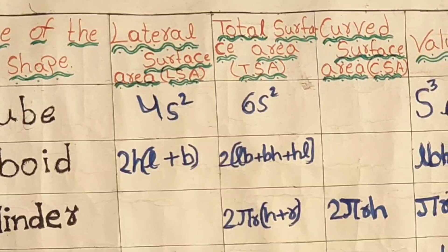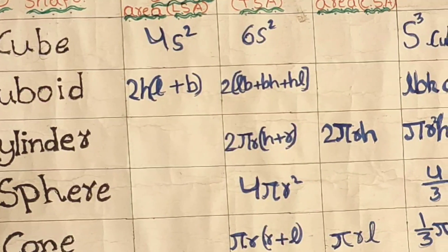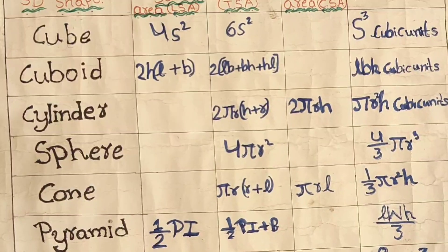Name of the 3D sets: lateral surface area, total surface area, curved surface area, volume. Lateral surface area of cube: 4S square. Total surface area of cube: 6S square. Volume of cube: S cube.